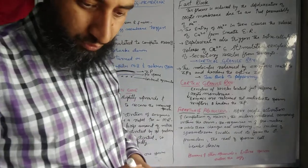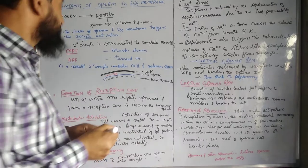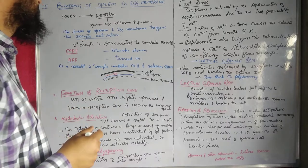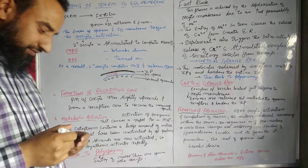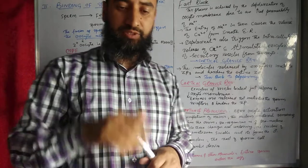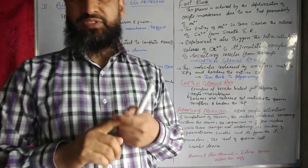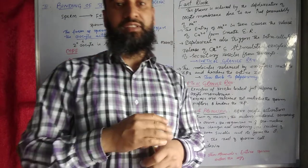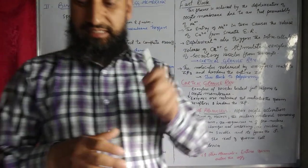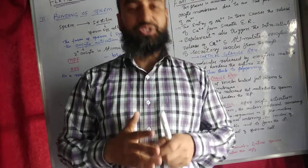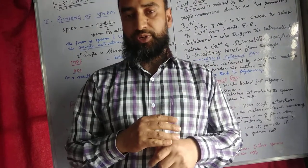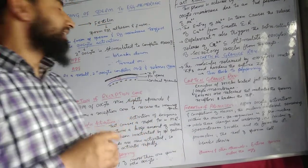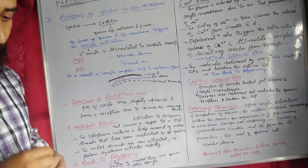As-salamu alaykum wa rahmatullahi wa barakatuh. My dear students, we were discussing fertilization. In the previous lecture, we discussed the fertilizing anti-fertilizing reaction. The significance of the fertilizing anti-fertilizing reaction is that it reduces the chances of polyspermy. This is the main function, the main advantage, the main significance of the fertilizing anti-fertilizing reaction.